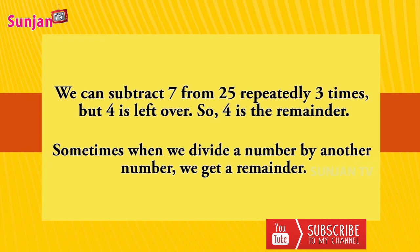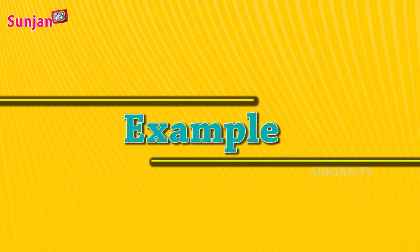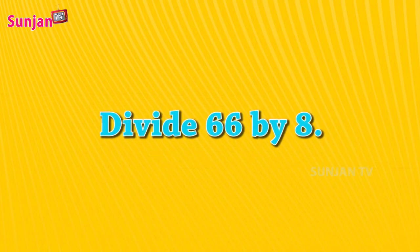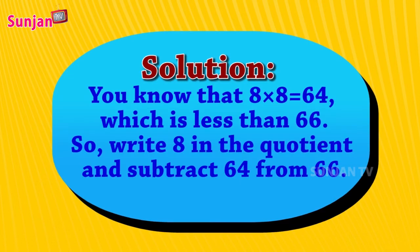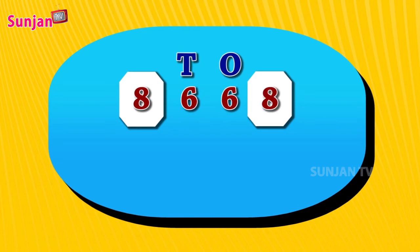Long division example: Divide 66 by 8. Solution: You know that 8 times 8 equals 64, which is less than 66. So write 8 in the quotient and subtract 64 from 66. 66 minus 64, the remainder is 2.